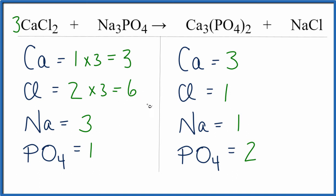Let's try to fix the chlorines next. We can see that we have one here and six here. We can put a six in front of the NaCl. So let's do it. One times six equals six chlorine atoms, and then one times six equals six sodium atoms.